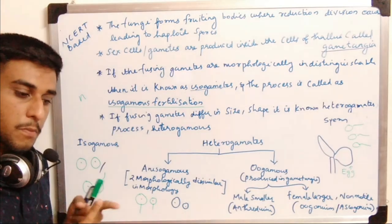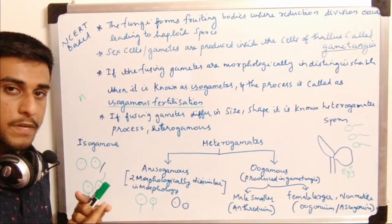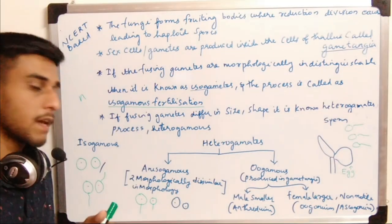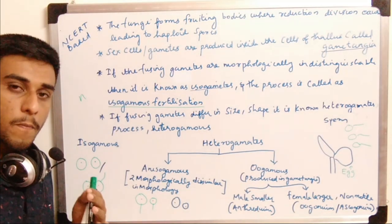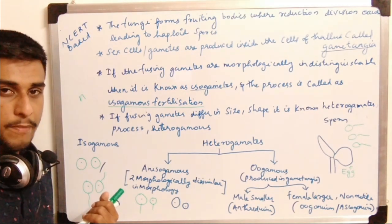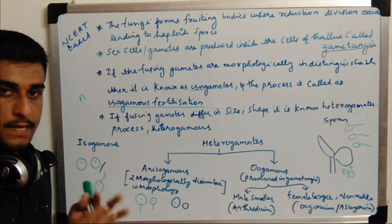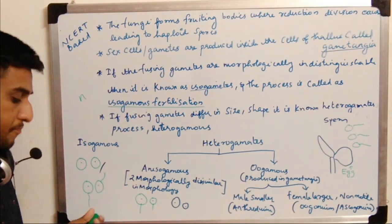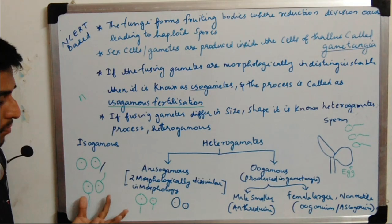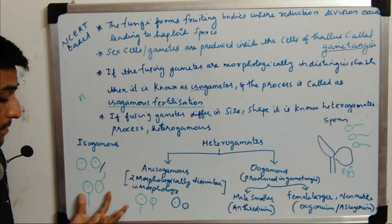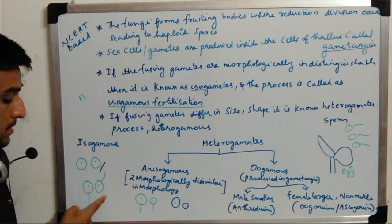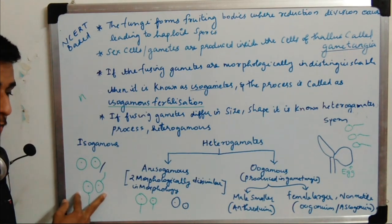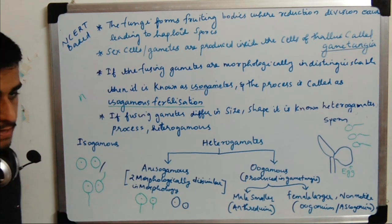The fusion of isogametes will be known as isogamous fertilization. As shown in the diagram, both gametes are morphologically similar — we can't distinguish whether one is male or female. They can be motile or non-motile depending on the class of angiospore from which the spore is produced.